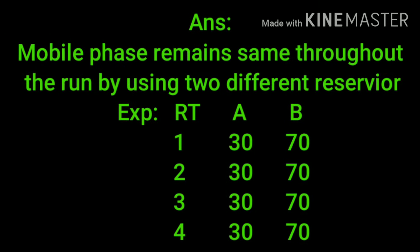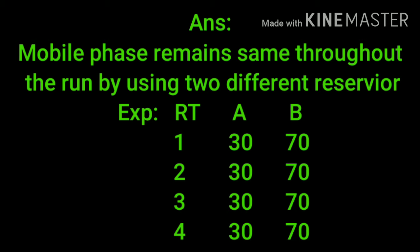What is linear gradient? Mobile phase remains the same throughout the run by using two different reservoirs. Example is from one minute to four minutes, composition A and B are given 30:70, which are not changed till four minutes.